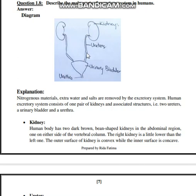The kidney is also attached to a tube called the ureter. This tube then opens to the urinary bladder, and from the urinary bladder a small tube opens, which is called the urethra. Now we will discuss the kidney.